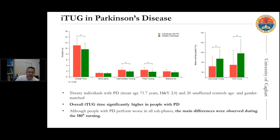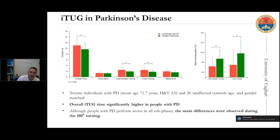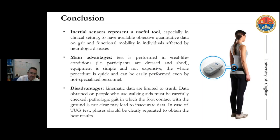We also performed a similar analysis in Parkinson's disease. Even though the overall TUG time is higher in individuals with Parkinson's disease, in this case the difficulties are more specifically located in the intermediate and final turning phases. By measuring each sub-phase separately instead of checking only the overall TUG time, you can identify the most critical phase and possibly adjust the kind of physiotherapy needed to correct the most important issues.